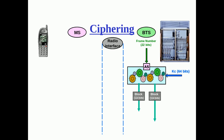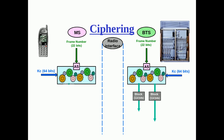The BTS uses the ciphering key and the 22-bit frame number to generate one 114-bit ciphering sequence for the uplink and one 114-bit ciphering sequence for the downlink. Similarly, the mobile station itself uses the ciphering key generated from A8 as well as the frame number in order to generate the ciphering sequences for both uplink and downlink.